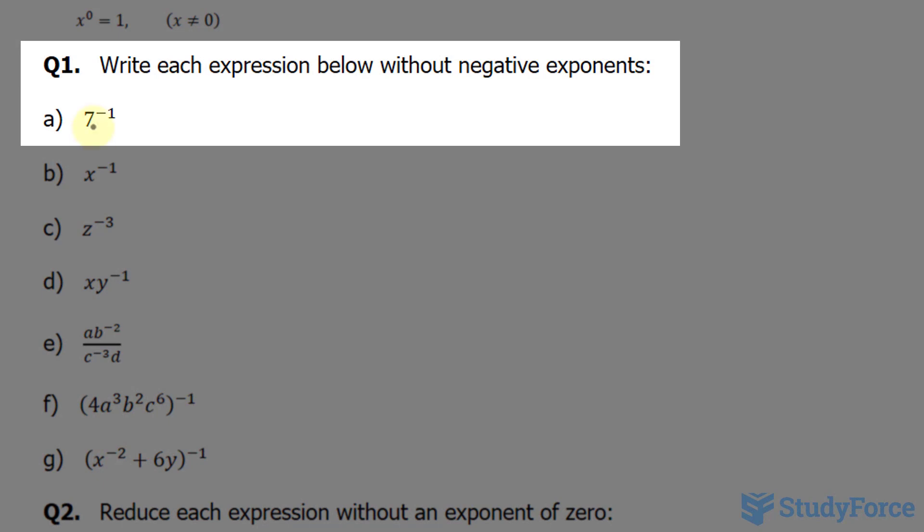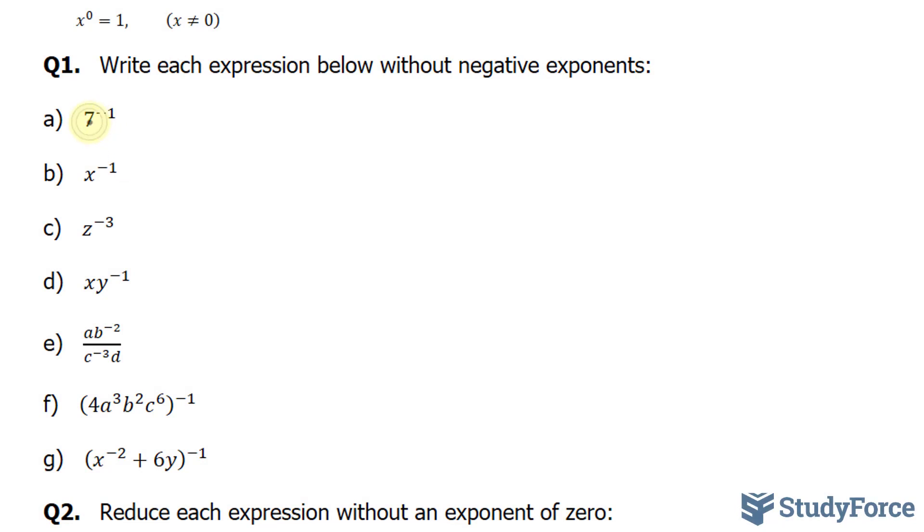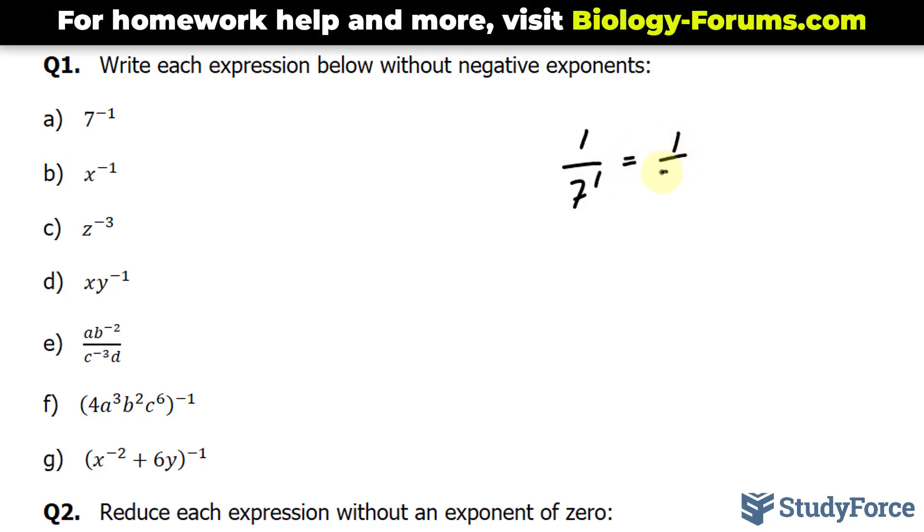In question A, we have 7 to the power of negative 1. Here we would flip 7, where it becomes 1 over 7, and instead of this negative 1 power, it becomes 1. So your final answer is 1 over 7.